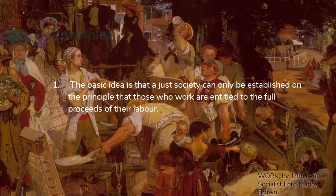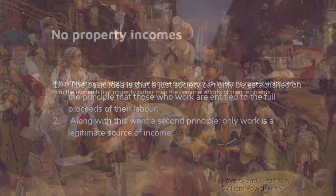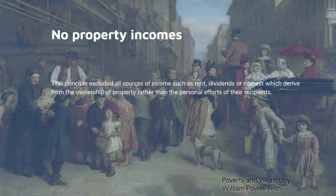The basic idea is that in a just society, the principle has to operate that those who work are entitled to the full proceeds of their labour. And along with this comes a second principle: that only work is a legitimate source of income. It obviously follows that if work has to be the source of income, property incomes get eliminated — income from rent, dividend or interest, anything which derives from the ownership of property rather than personal effort.